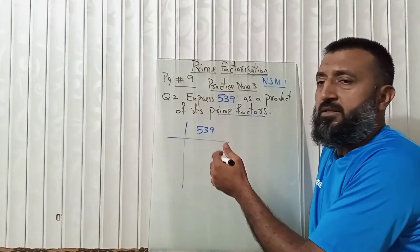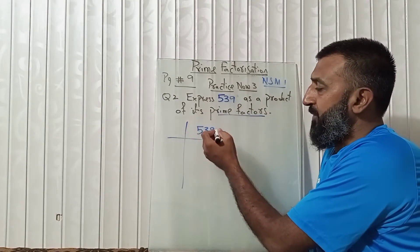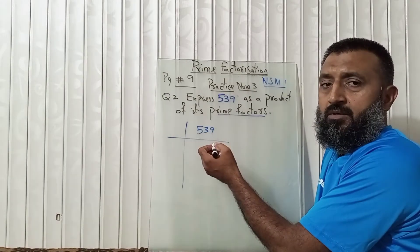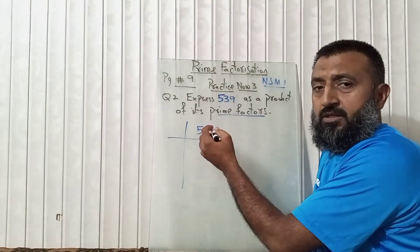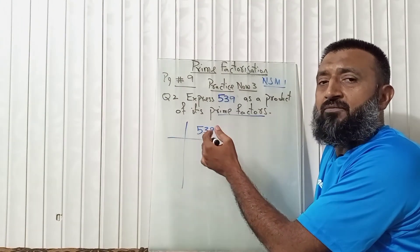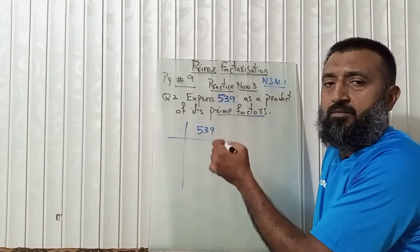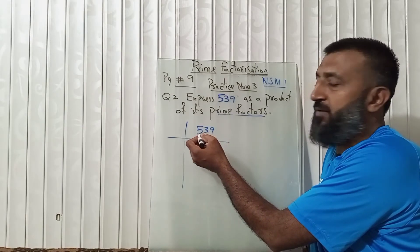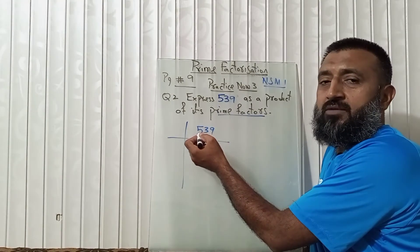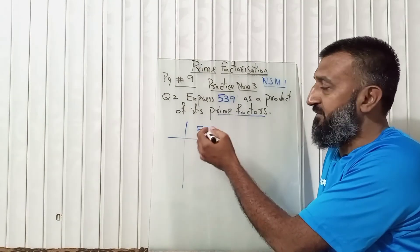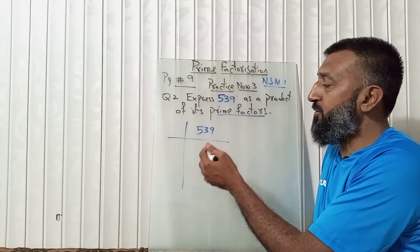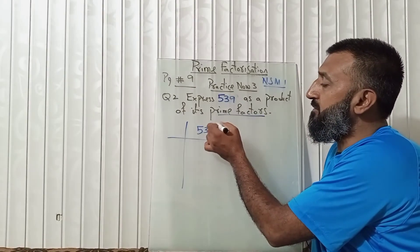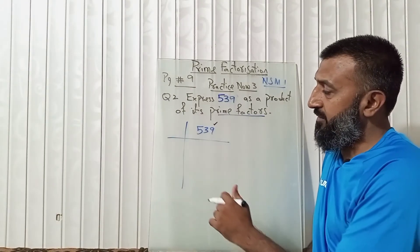The first odd number is 3. The divisibility rule for 3 says: add all the digits — if their sum is divisible by 3, you can divide. Adding the digits: 9 + 3 = 12, 12 + 5 = 17. Now 17 is not divisible by 3. Also not divisible by 5, because 5 requires a 0 or 5 in the units column. So we think about 7.